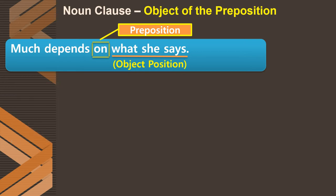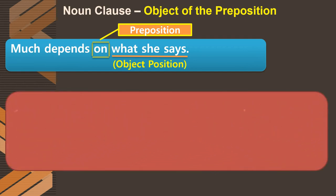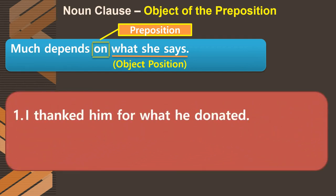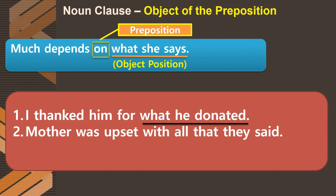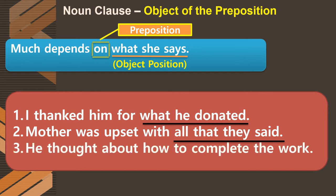Examples of noun clauses as object of the preposition: First, 'I thanked him for what he donated' — object of the preposition 'for.' Second, 'Mother was upset with all that they said' — 'all that they said' comes after the preposition 'with,' so it is object of the preposition 'with.' Third, 'He thought about how to complete the work' — 'about' is a preposition, so this is the object of the preposition 'about.'